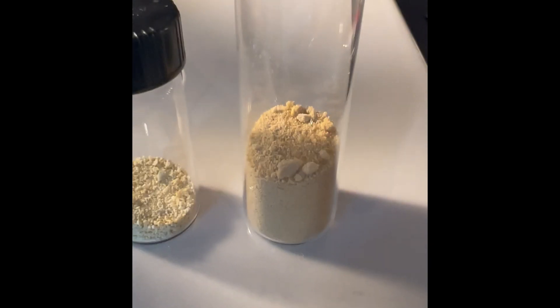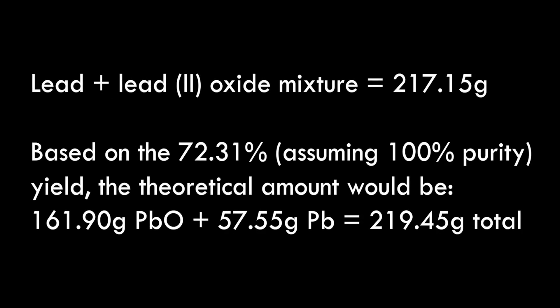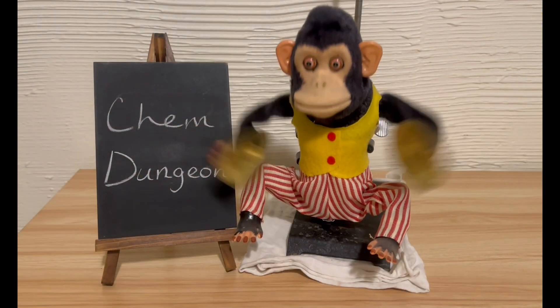The combined weight of all three crops ended up being 61.73 grams and, assuming 100% purity even though the second and third crops definitely aren't, represents a 72.31% yield. I'm very happy with this given the rough reaction conditions and the cheapness of the starting materials. The lead oxide and unreacted lead mixture weighed 217.15 grams. Based on the 72.31% assumed yield, I calculated that the mixture should have weighed 219.45 grams, but I couldn't chisel all of it out of the steel reaction cup, so I'd say it's close enough.